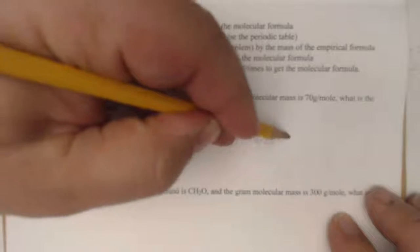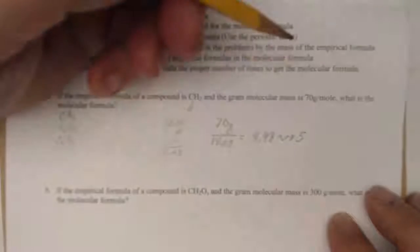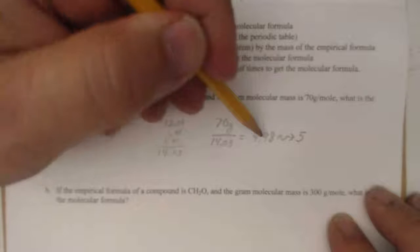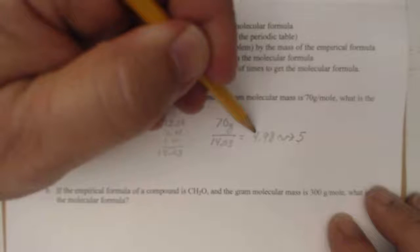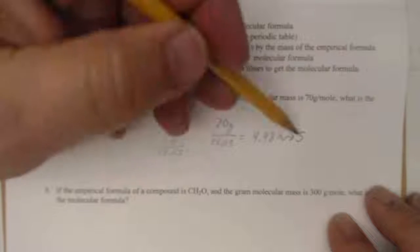And the answer comes out to be 4.98. Well, that's pretty much five times. It's going to always end up being a whole number. It should be very close to a whole number. If it's not, check your numbers here. So, we need five sets of CH2.